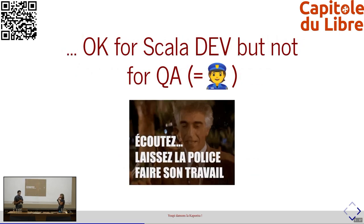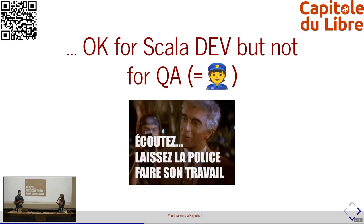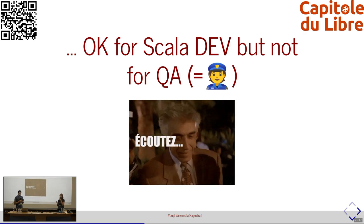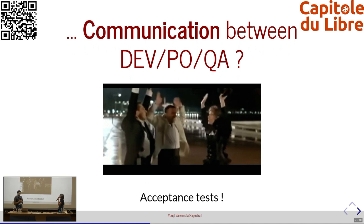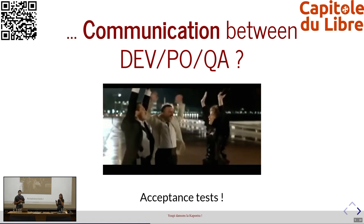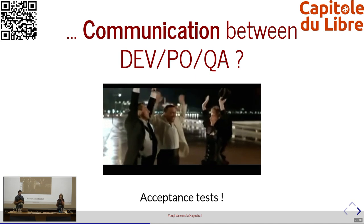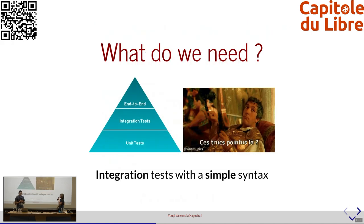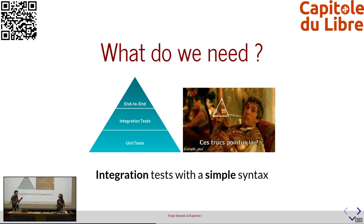C'est toujours très intéressant de faire des tests de bout en bout, des tests end-to-end, mais cet outil ne permet pas de faire ça. En plus, le test va être écrit en Scala, donc plutôt à destination des développeurs. Nous, on recherche un outil qui permettrait à notre ingénieur QA de faire ces tests avec des tests lisibles. Plus les tests seront lisibles, plus ça donnera un outil de communication. On peut ainsi définir ensemble l'attendu d'un stream et faire des tests d'acceptance.